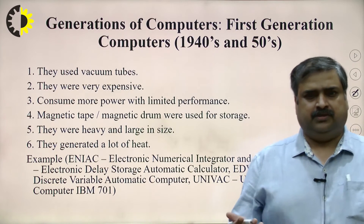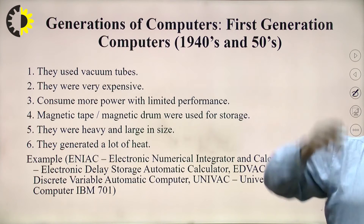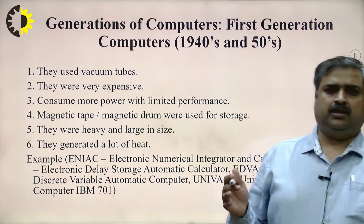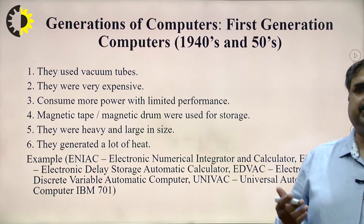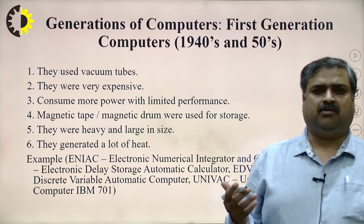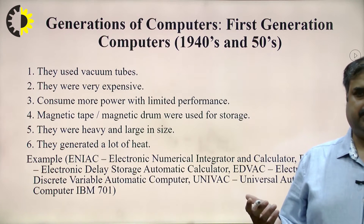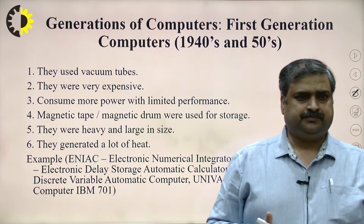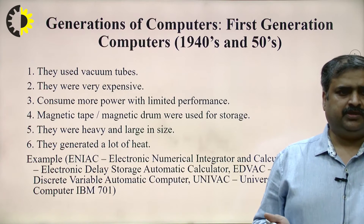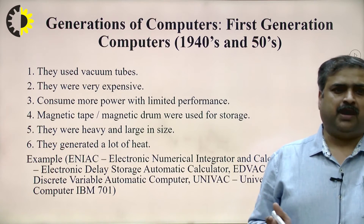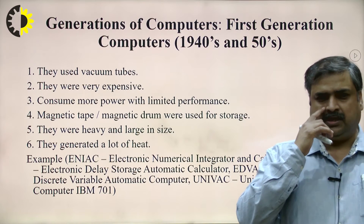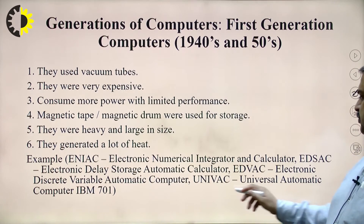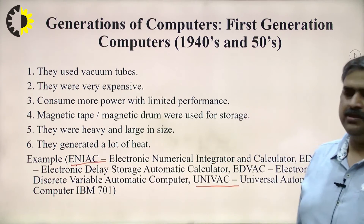Computers evolved from the 1940s. At that time computers were very large machines. The evolution is interestingly described in the Hollywood movie 'The Imitation Game.' First-generation computers used vacuum tubes, were very expensive, consumed a lot of power with limited performance, and used magnetic tapes and drums, making their size very large. Examples include UNIVAC and ENIAC.